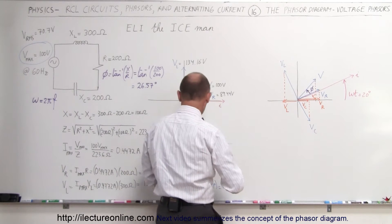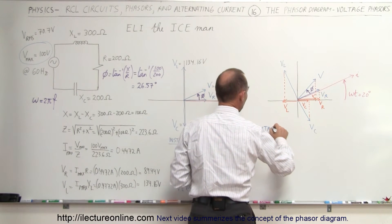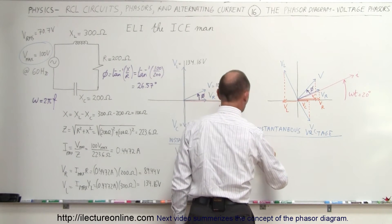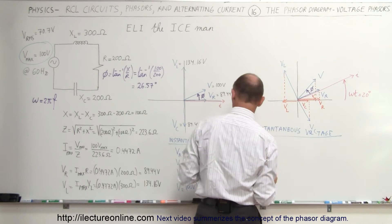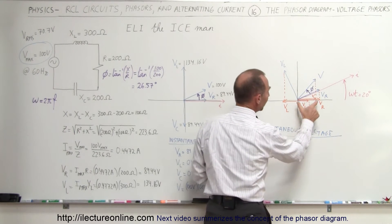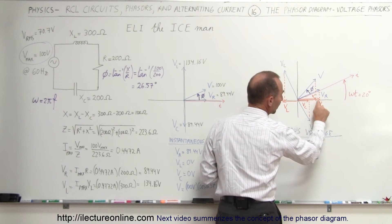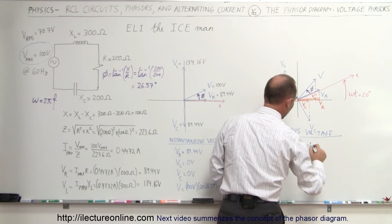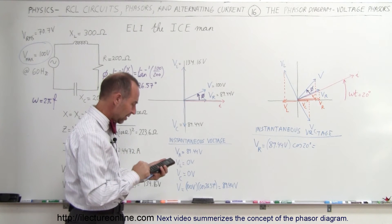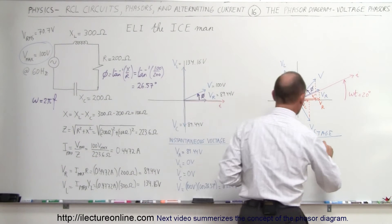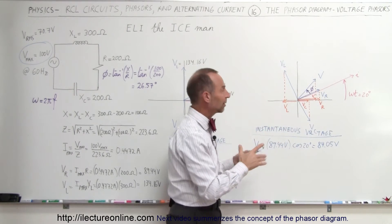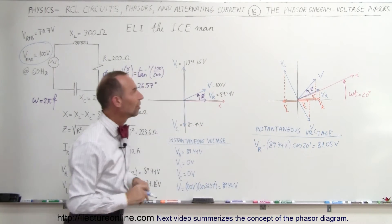Let's calculate the instantaneous voltage in this situation. The voltage across the resistor is going to be equal to the maximum voltage across the resistor, which we know is 89.44 volts. We have to multiply that times the cosine of 20 degrees to find the horizontal component. So 89.44 times the cosine of 20 degrees gives us 84.05 volts — that will be the voltage across the resistor after enough time has passed so that we're now 20 degrees further into the phase of the circuit.